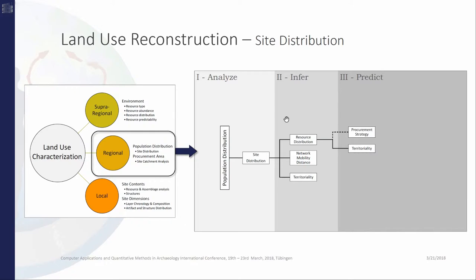First, the direct analysis of population distribution means analyzing site distribution. We can do this with point pattern statistics or other methods. Once we've characterized the site distribution, we can infer certain properties like the resource distribution. From here, if we have the data available, we can predict the procurement strategy.